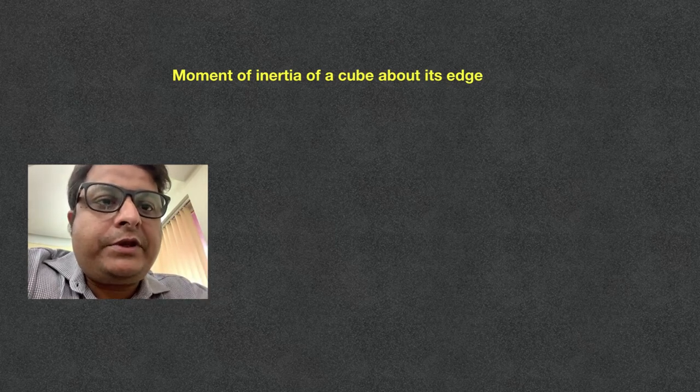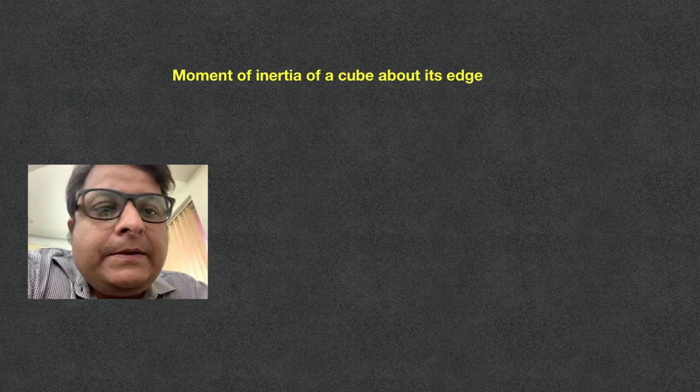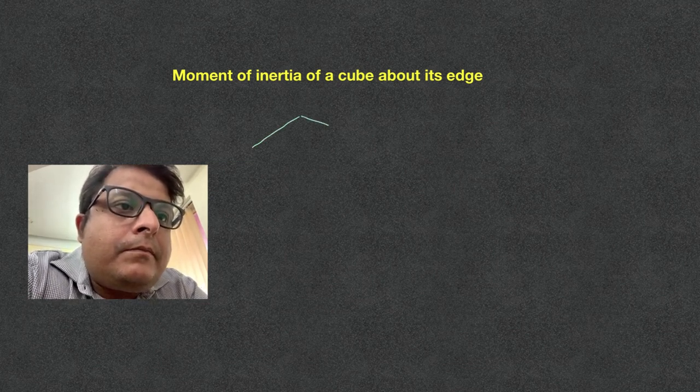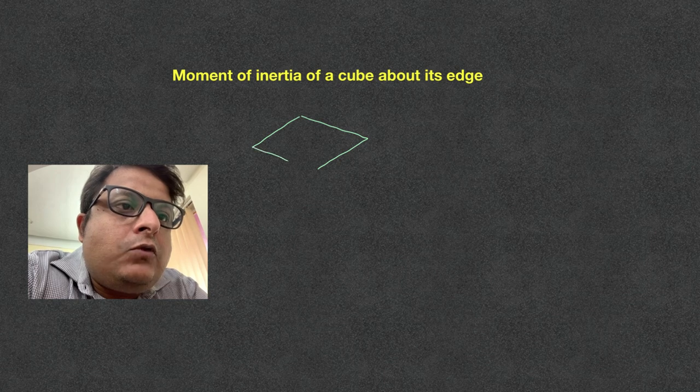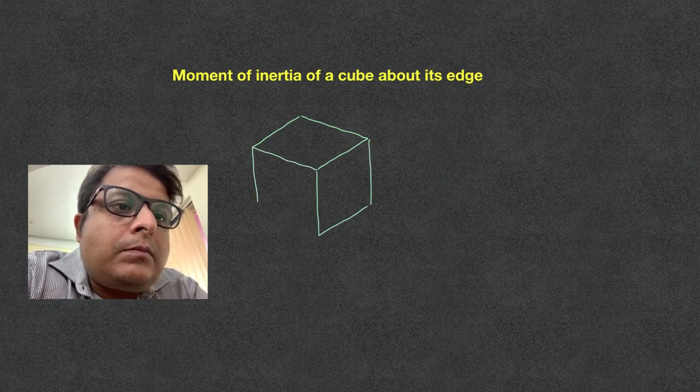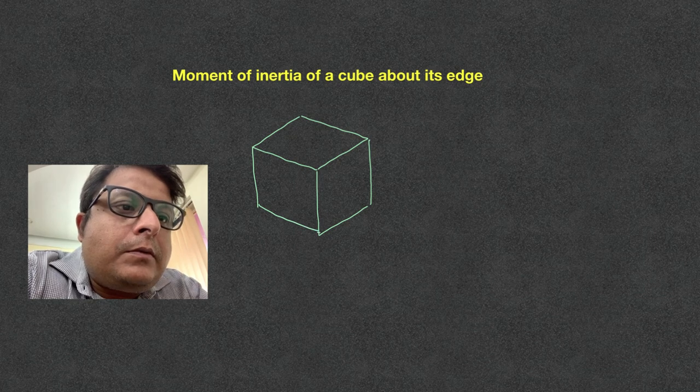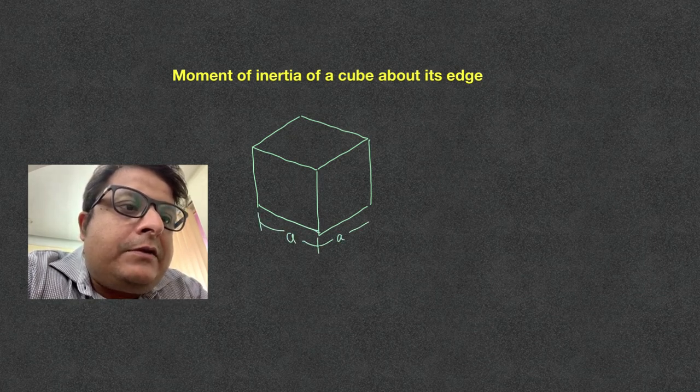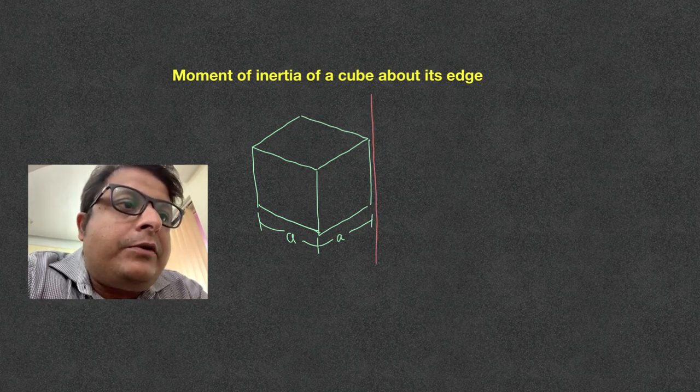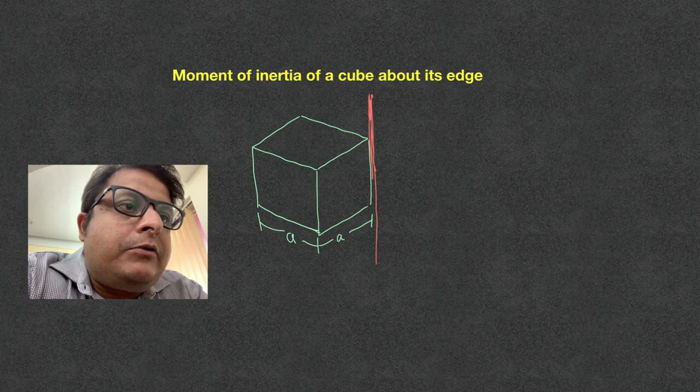We have to find the moment of inertia of a cube about its edge. This is a cube. Say each side of the cube is A. And about an edge of the cube, we have to calculate moment of inertia. I mean about this edge.